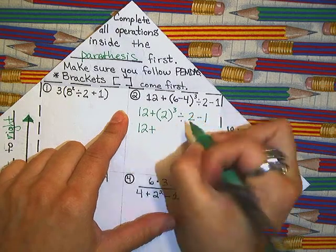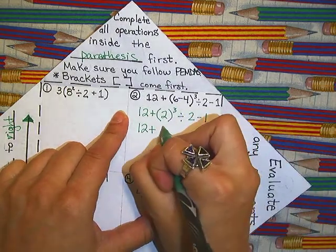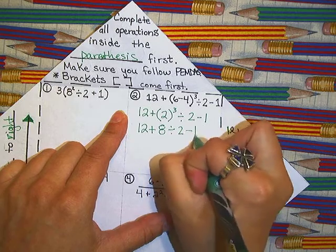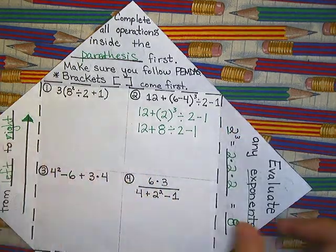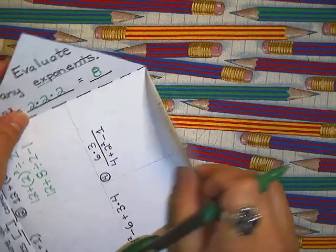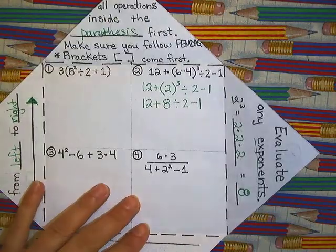So we are going to go to step two, which is exponents. And you do see some exponent here, or one I should say. Twelve plus, luckily that is the one we have already done. Two to the third is eight. No more parentheses. No more exponents.